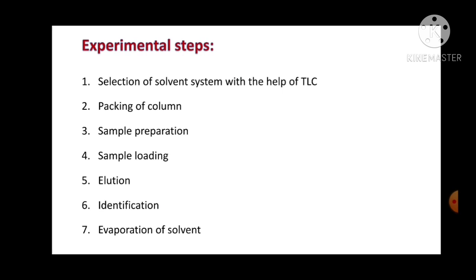Once we do that, we can pack the column. We have to decide whether we are going for isocratic elution or gradient elution. For isocratic elution, whatever solvent system we selected, that same system is used to prepare the silica slurry. For gradient elution, we start with a single solvent and gradually increase the polarity by changing the composition as we proceed. Then we prepare the sample, load it on the packed column, perform the elution by pouring the mobile phase, and identify the sample.